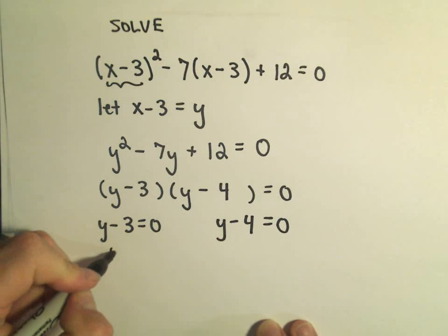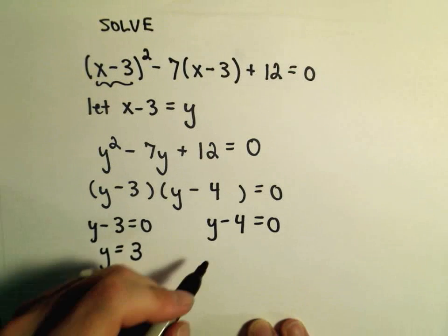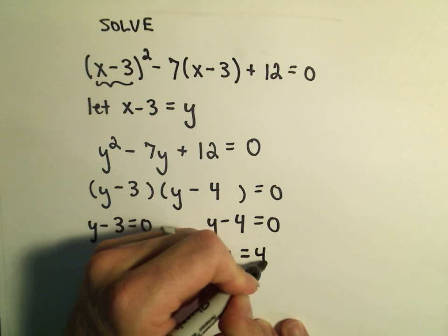To solve these, we'll add 3 to both sides in the first part to get y equals 3. To solve the second one, we'll add 4 to both sides to get y equals 4.